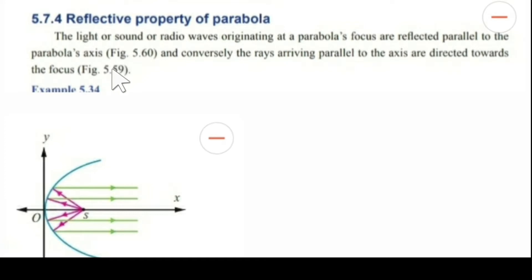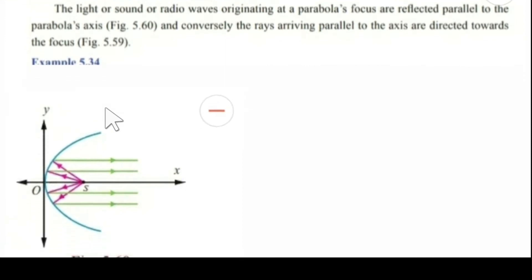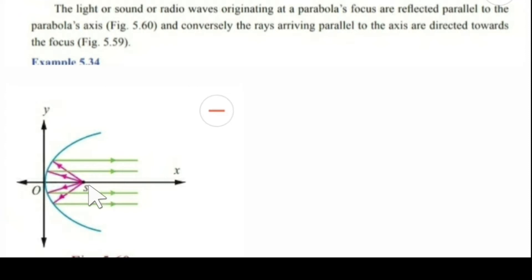Now see this diagram — the light or sound or radio waves originating at a parabola's focus. This S is the focus of this parabola, and this is an open rightwards parabola which is symmetrical about the x-axis. So the axis of the parabola here is the x-axis. The light or sound originating at the parabola's focus, while reflecting, will be parallel to the parabola's axis.